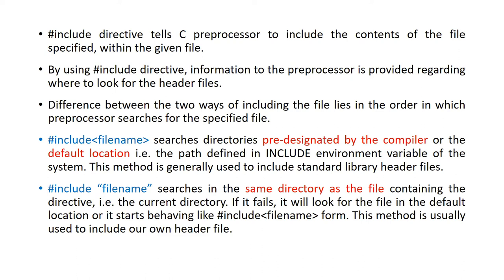The difference between the two ways of including a file lies in the order in which the preprocessor searches for the specified file. The first form — hash include with the file name given within angular brackets — searches the directories pre-designated by the compiler, that is the default location defined in the include variable of the system. This method is generally used to include standard library header files.